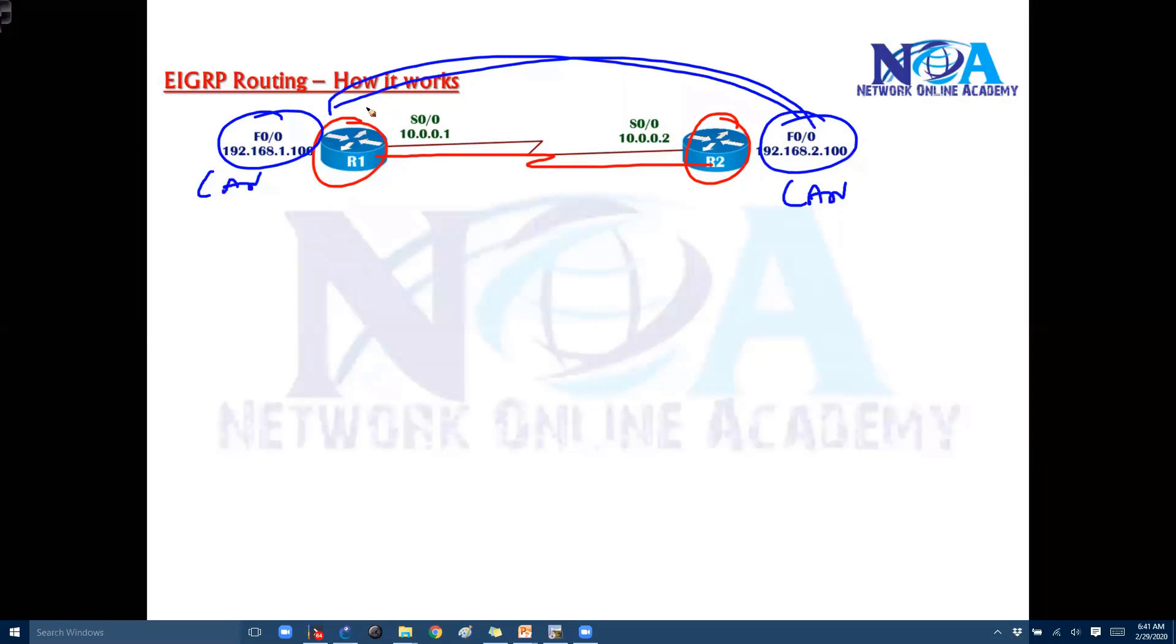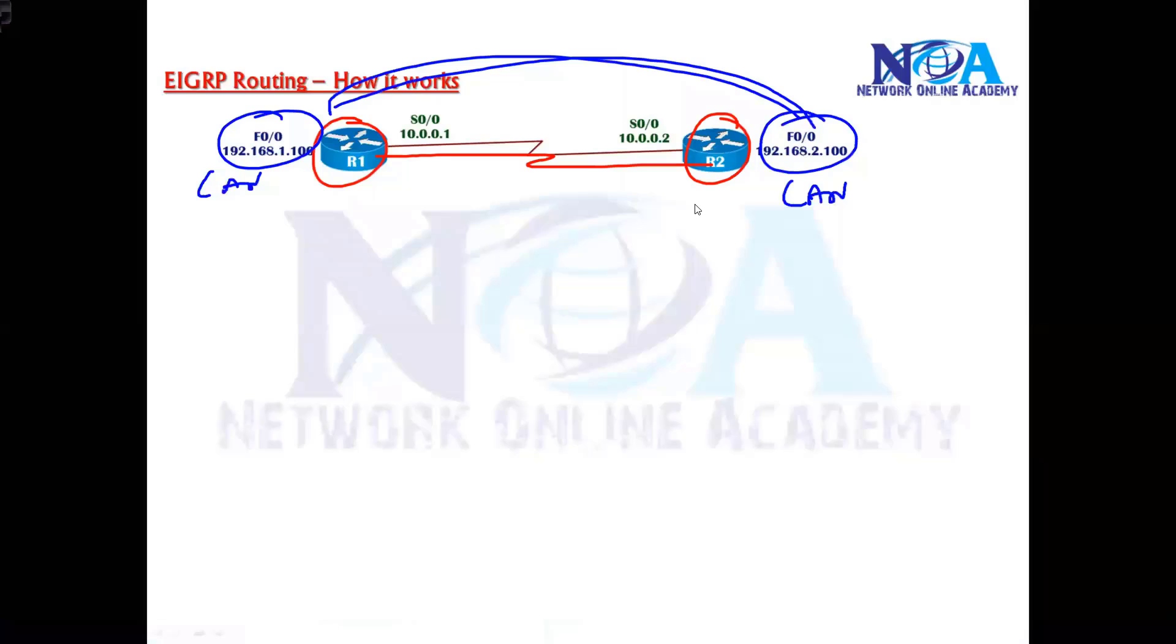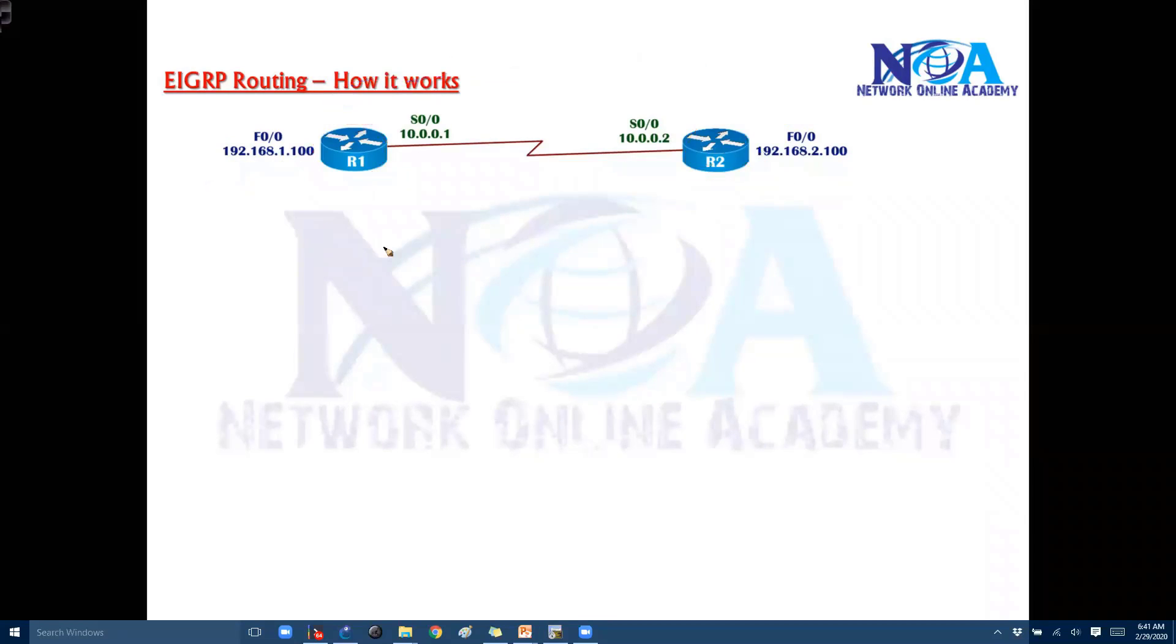Now for that we need to make sure that we are going to configure EIGRP. So let's assume that we have already configured EIGRP in this scenario. Now whenever you configure EIGRP, we use a network command to authorize that particular network. So whenever you configure EIGRP on router 1...